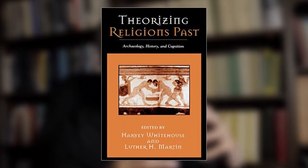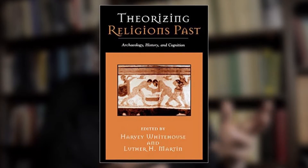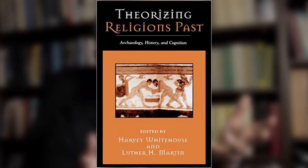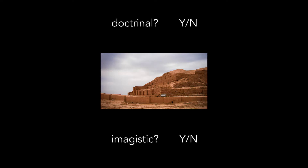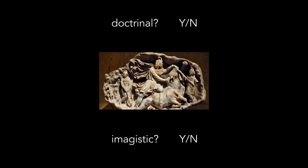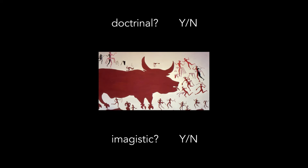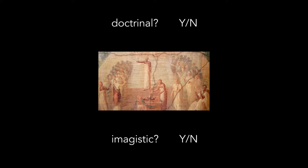A 2004 volume edited by Whitehouse and Luther Martin collected essays from historians and archaeologists taking the predictions of the modes theory and putting them next to their data — looking at archaeological or textual records to see if the theory's predictions match what they see in historical materials. In some cases it fit fairly well, and in others historians argued it doesn't work very well at all, sometimes seeing a mixed mode.